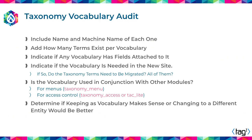Consider if a vocabulary is working in conjunction with other modules. For example, taxonomy menu allows you to build a menu out of your taxonomy system. Taxonomy Access Control (TAC) light allows you to provide access controls to certain parts of the website based on your taxonomy terms. Consider if there is something else in addition to just the terms.